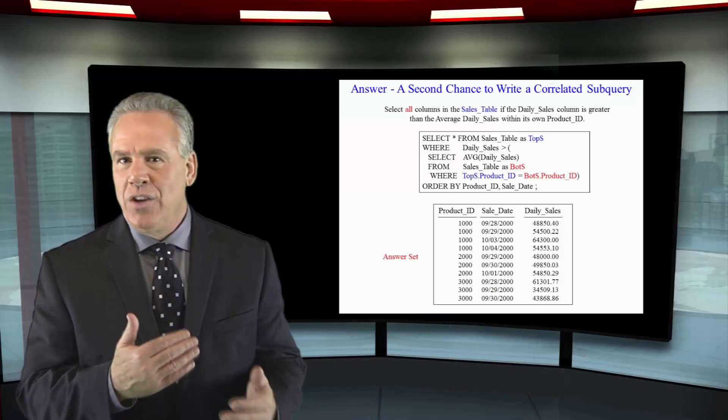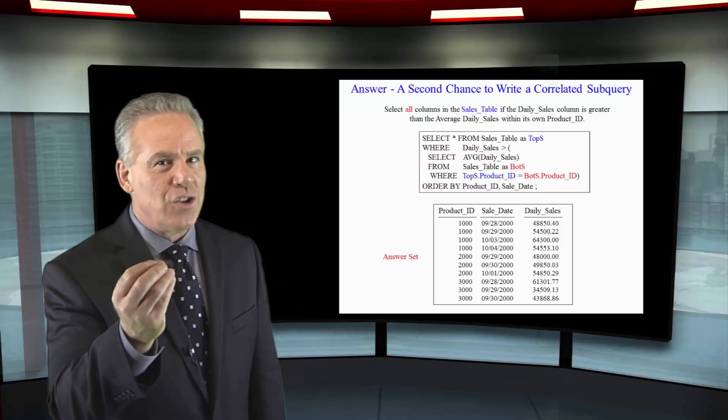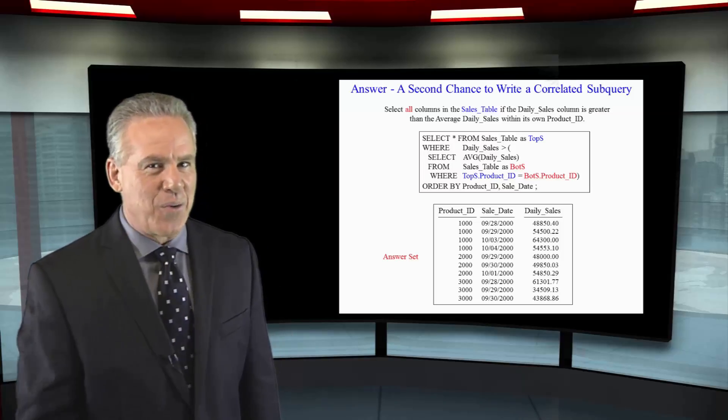Since we wanted to find out who's making more than the daily sales within their own product ID, it's going to be the product ID right here in that last where clause. That's how a correlated subquery is going to work. You're getting much closer at doing this. We'll make a little change and you're going to master this on the next query.